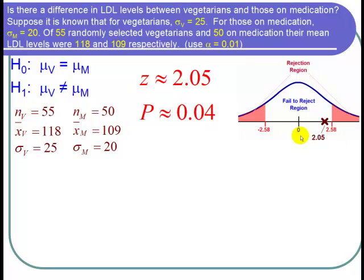So on a picture, the rejection regions are the two tails to the left of negative 2.58 and to the right of positive 2.58. And in between is the fail to reject region. The z-value that we got was 2.05 about. And we can see that 2.05 is right here in the fail to reject region in between negative 2.58 and 2.58. So we definitely see we fail to reject.